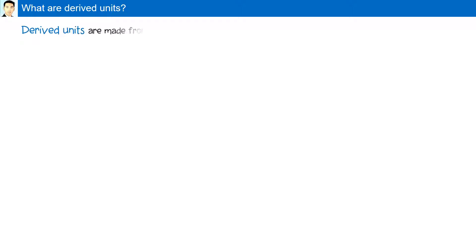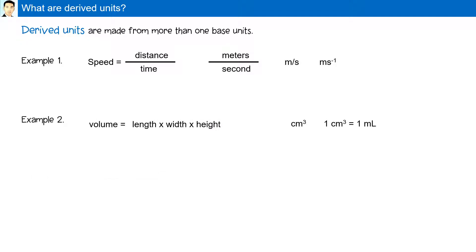What are derived units? Derived units are made from more than one base unit. For example, speed, volume, and density.